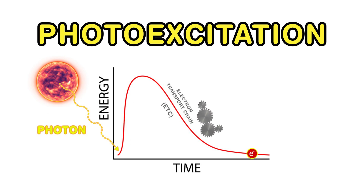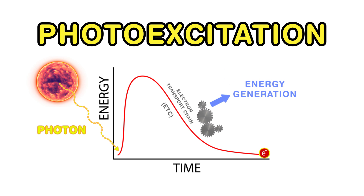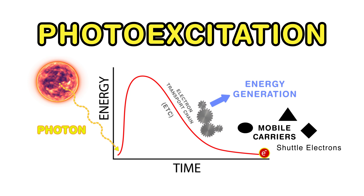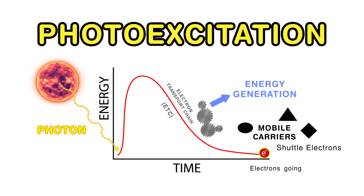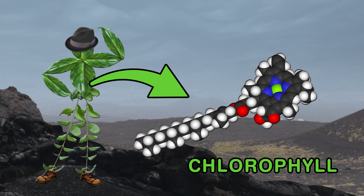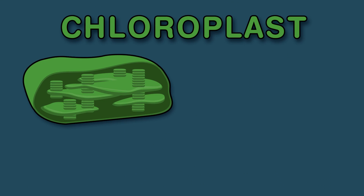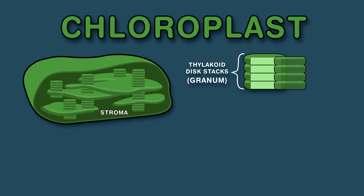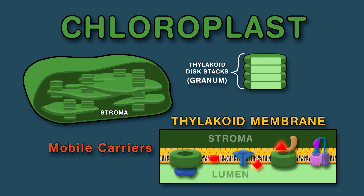Mobile carriers shuttle these electrons, with electrons going to lower energy states doing work. Plant leaves have chlorophyll — that's what makes them green. Inside there are chloroplasts. This pigment can be seen. The chloroplast contains stroma and thylakoid disk stacks called granum, where mobile electron carriers and complexes work in tandem.